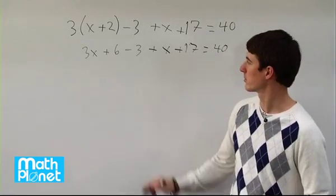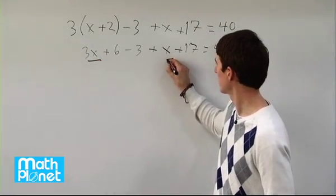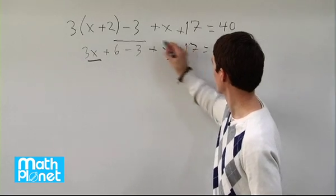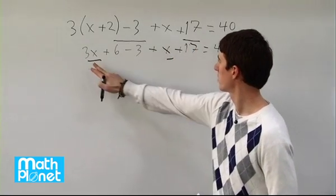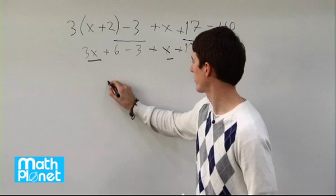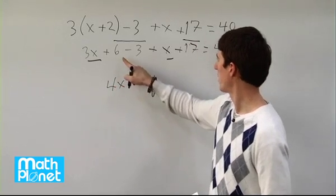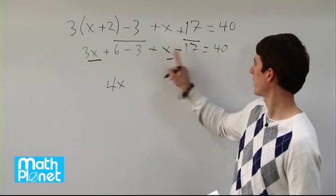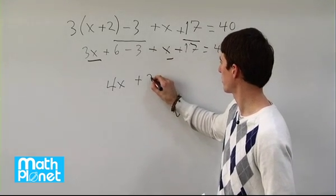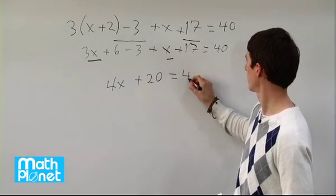Now we want to combine like terms. We have x's and numbers. 3x plus x gives us 4x. We have 6 minus 3 is 3, plus 17 is 20, so 4x plus 20 equals 40.